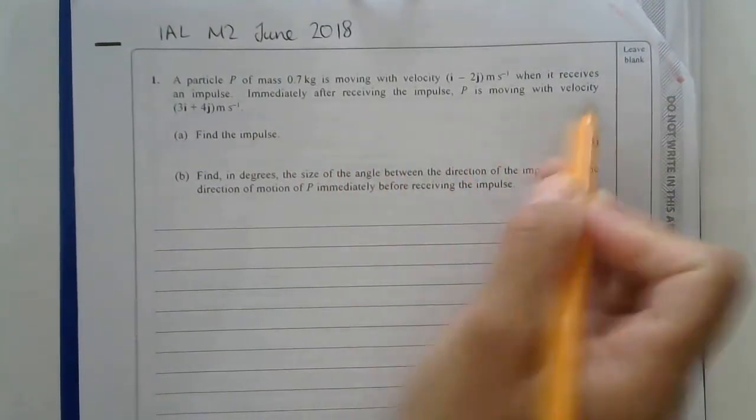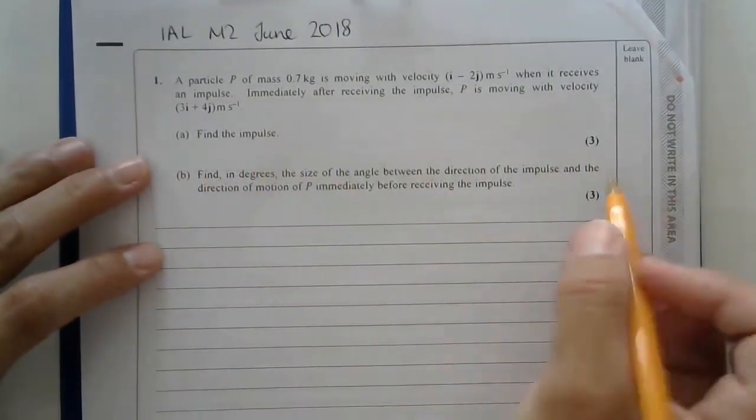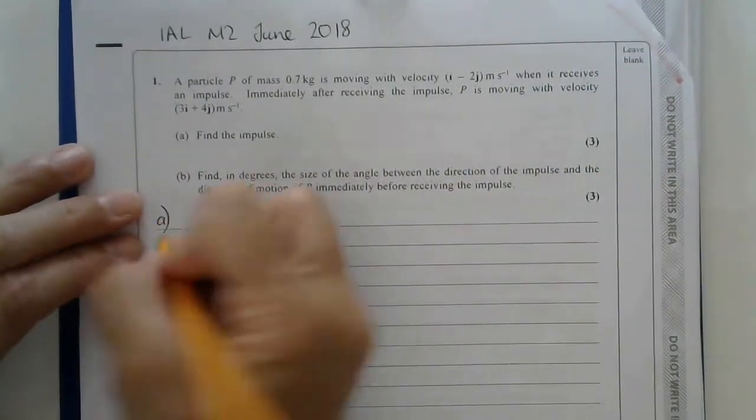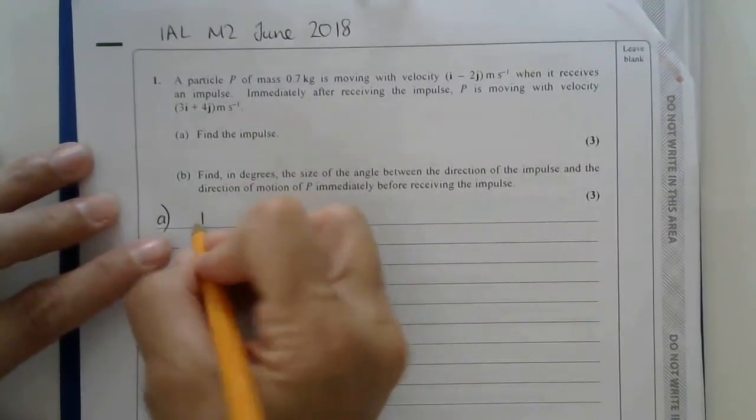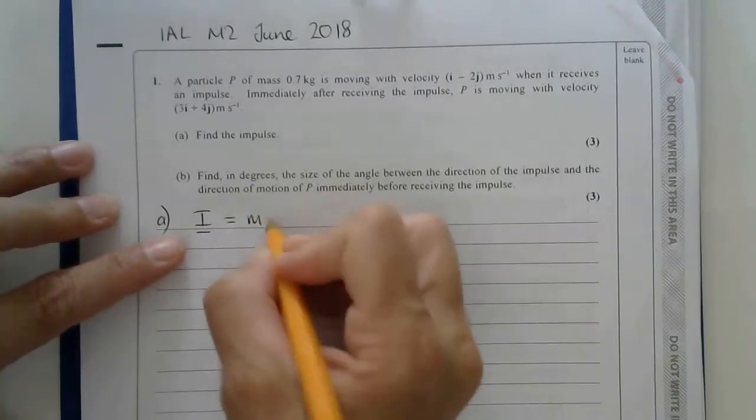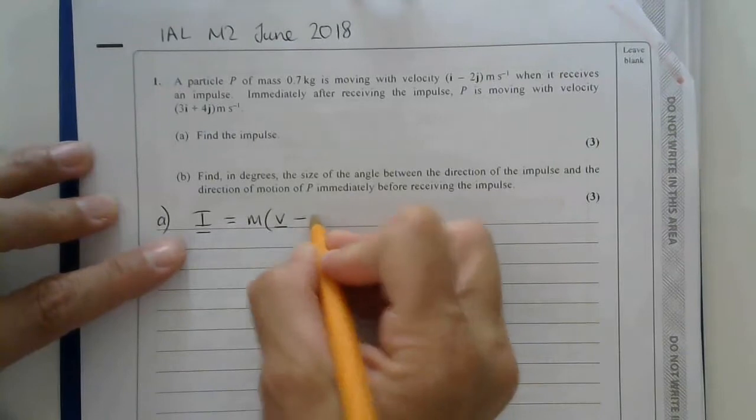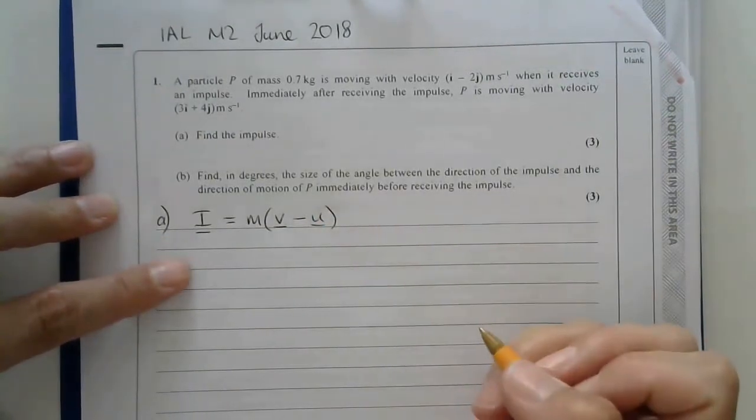Immediately after receiving the impulse, the particle is moving with this velocity and they're asking me to find the impulse for three marks. I'll label this part of the question. The formula I'm going to need to use is impulse equals mass multiplied by the difference between the final velocity and the initial velocity.